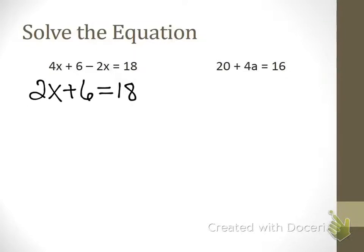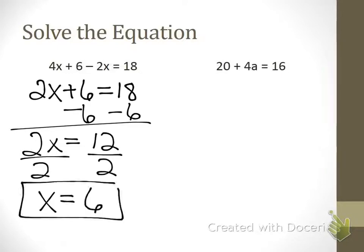So two x plus six equals eighteen. Now you've got a two-step equation. So two-step equation, I've got to solve for x. What do I do first? Subtract six from eighteen. All right, what's my last step, Andrew? Andrew, what do I do now? How do I solve for x? By... By... Very good. Divide both sides by two. x is six.